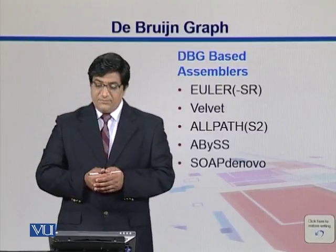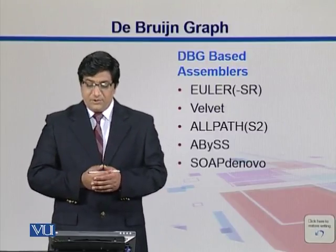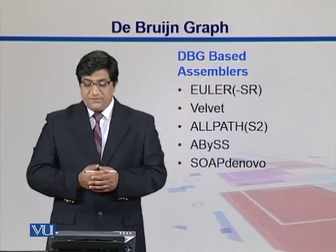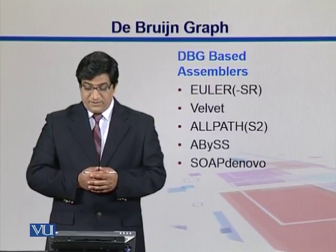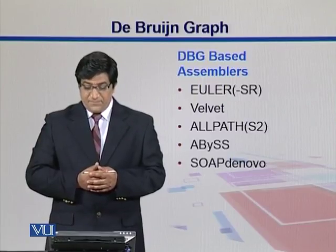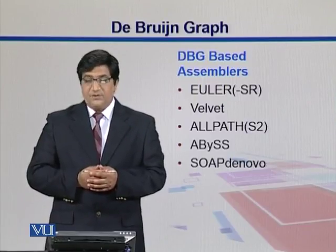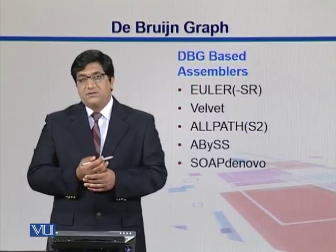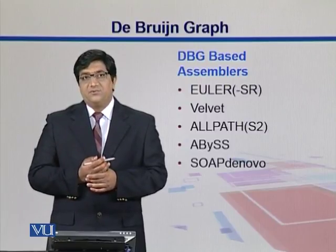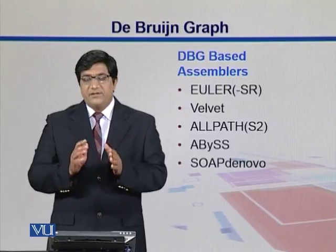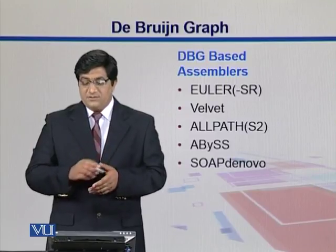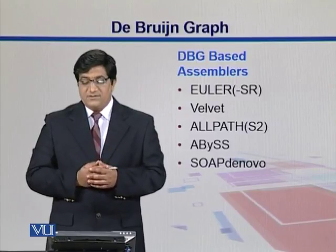Different de Bruijn graph assemblers include Euler, Velvet, Abyss, and SOAPdenovo. These are some of the most frequently used assemblers in genome assembly, and you might find them in the literature, since they deal with Solid, Illumina, or Solexa data.